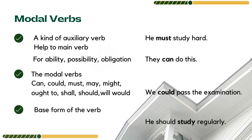Moving ahead, the next subtype under auxiliary verb is modal verbs. Modal verbs are a kind of auxiliary verb, and we use them to help the main verb. For example: 'He must study hard' — 'must' is the modal, used here to help the main verb 'study.' We use modal verbs to show ability, possibility, and obligation. For example: 'They can do this' — the ability of doing something is expressed with the modal 'can.'